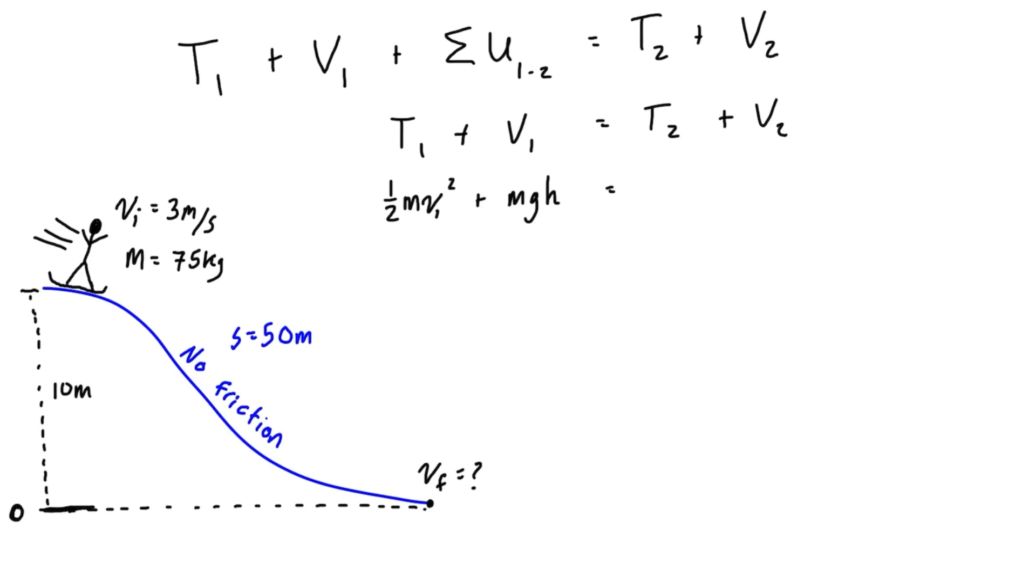Anyways, carrying on, we can write our expression for kinetic energy 2. So that's going to be one-half m v2 squared plus mgh2.